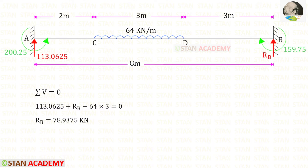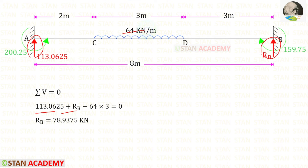Applying sigma V equals zero, RA and RB are both acting upwards (positive) and the UDL is acting downwards (negative) over a distance of 3 meters. For RB we will get 78.9375 kilonewton.